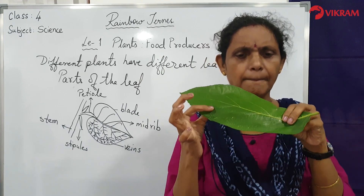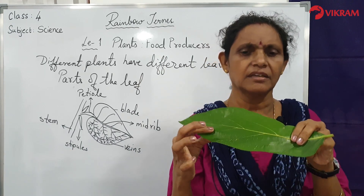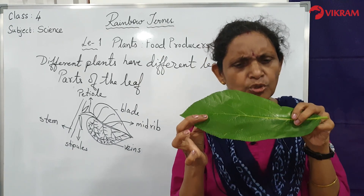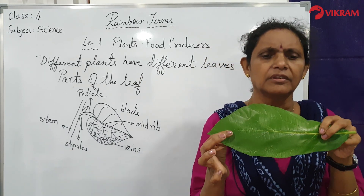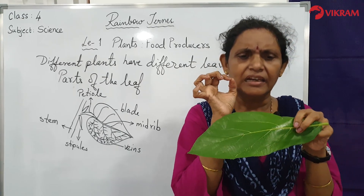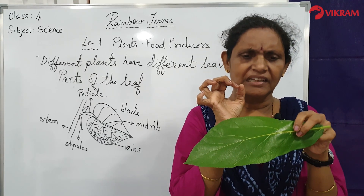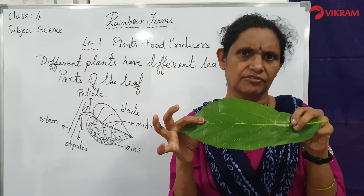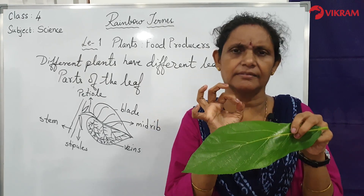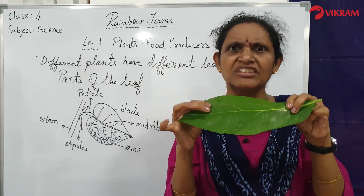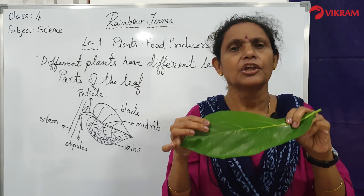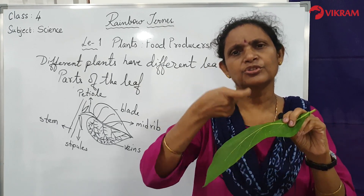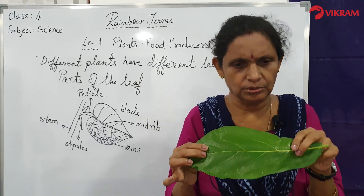A leaf has many stomata. However, these pores are so small they make less than one percent of the leaf surface. They are very small — you cannot see them directly. You need a microscope to see these small holes.